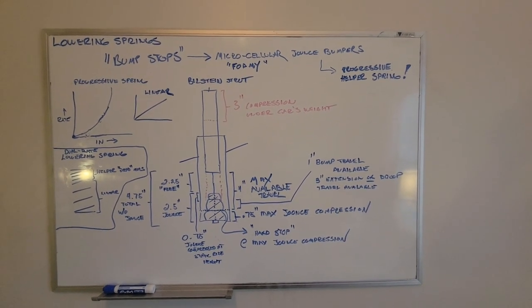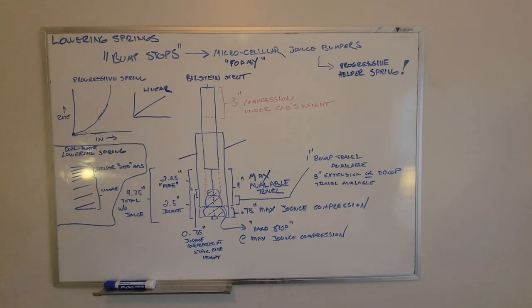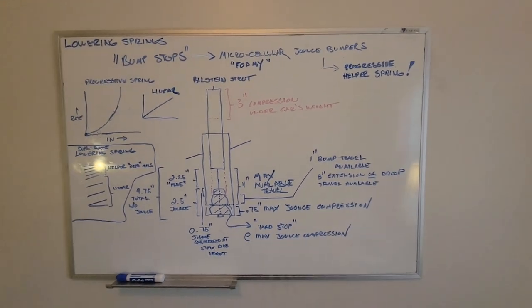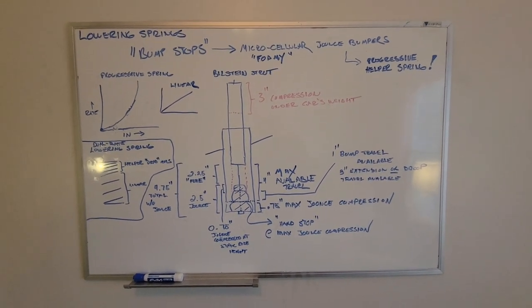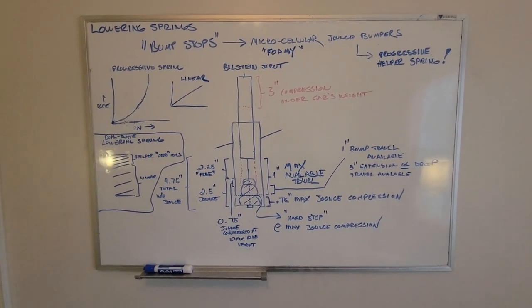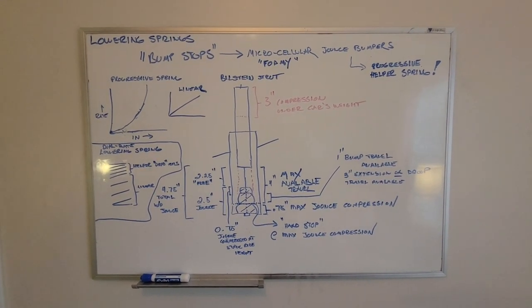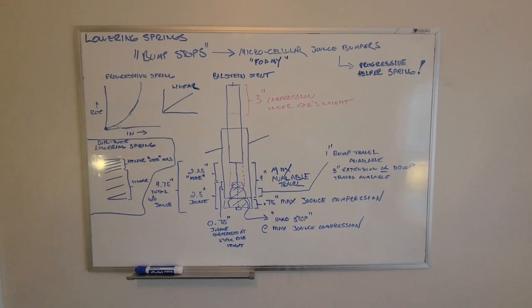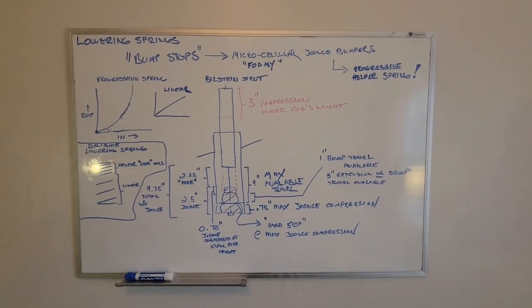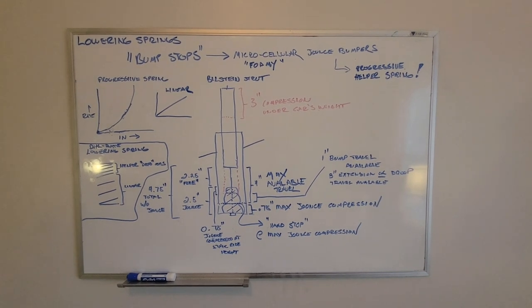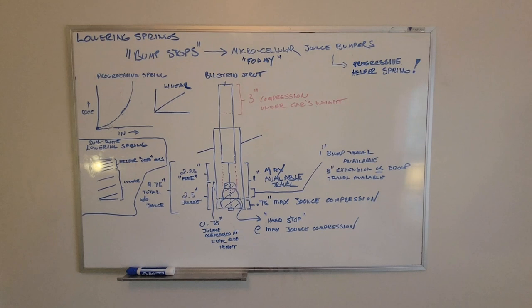The better term is actually microcellular jounce bumper or foamy jounce bumper, and those things are actually progressive helper springs. It's not a solid piece of rubber that you hit when you hit your bump stop, as many people like to say online. Now in the old days on live axle cars or trucks and things like that, you did have an actual bump stop. It was a piece of rubber or polyurethane that was very, very thin and it was just to protect metal on metal contact. But in 2023, we're using these jounce bumpers, these foamy jounce bumpers.